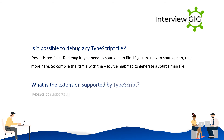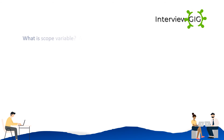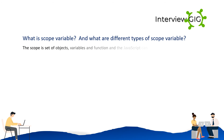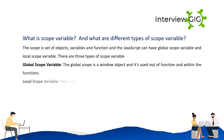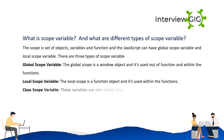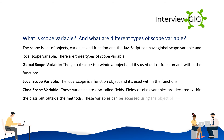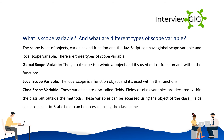What is the extension supported by TypeScript? TypeScript supports the .ts extension. What is a scope variable? The scope is a set of objects, variables, and functions. JavaScript can have global scope and local scope variables. There are three types: global scope variable (the window object, used outside and within functions), local scope variable (the function object, used within functions), and class scope variable (also called fields, declared within the class but outside methods, accessed using the object of the class; static fields can be accessed using the class name).